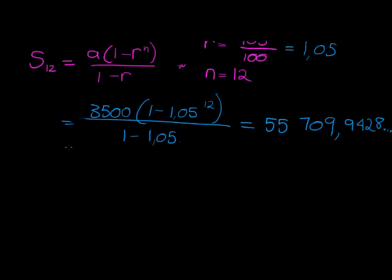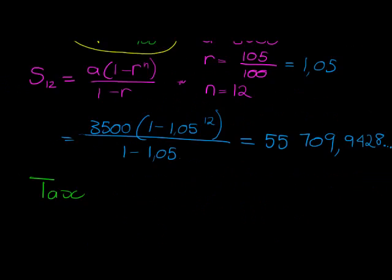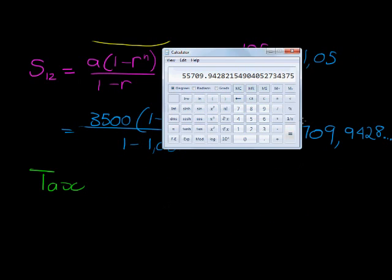So how much tax will I pay? Obviously we can see this is now more than 50,000, so I'm actually now going to pay on this side of the scale, 20%. So I leave that answer on my calculator and I just calculate 20% times 20 divided by 100.